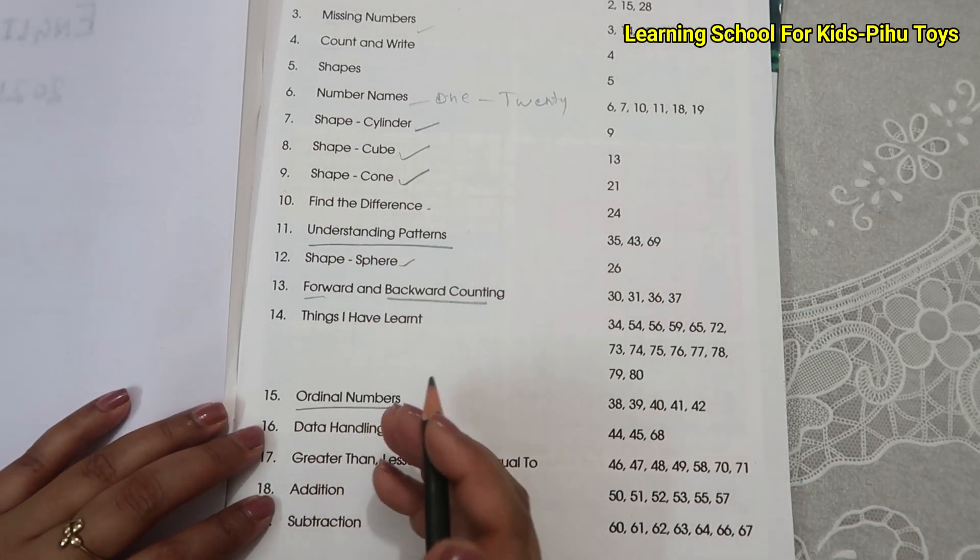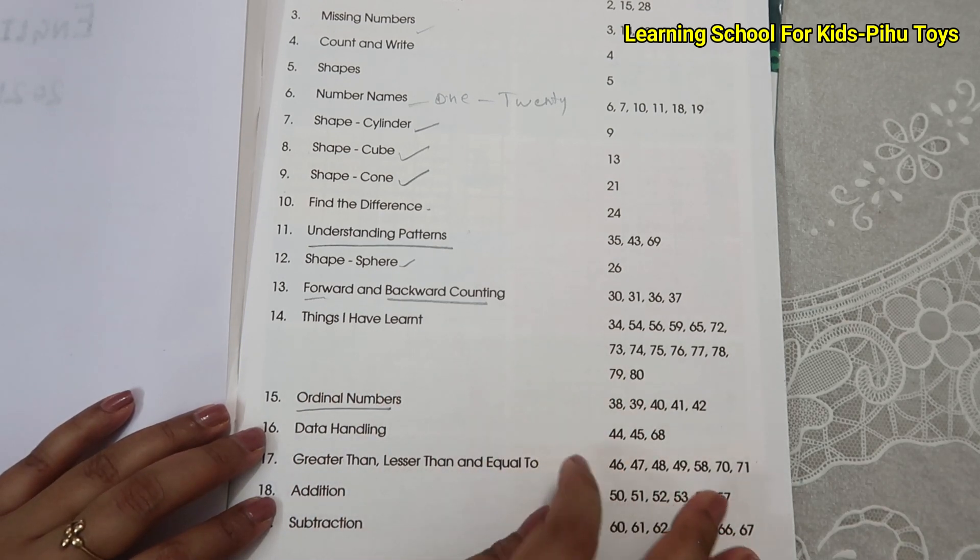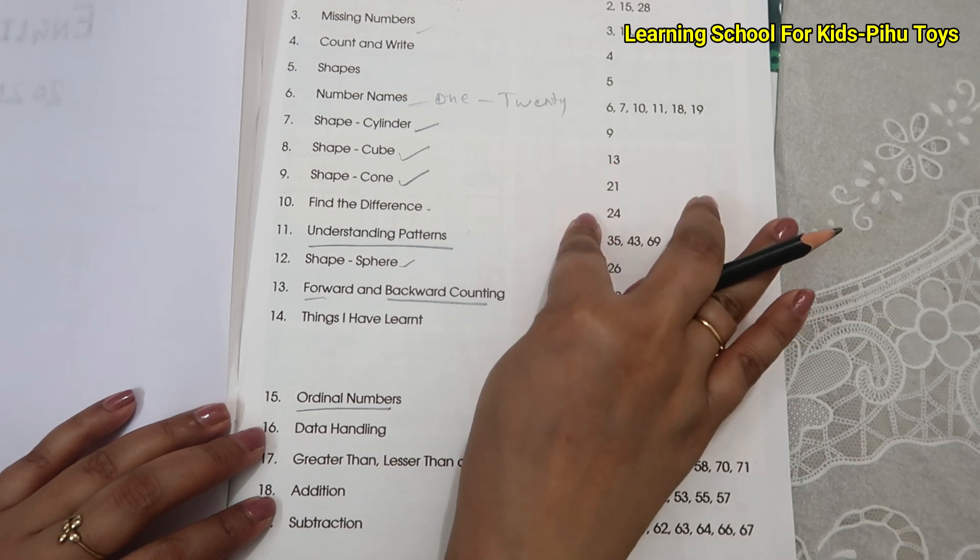Ordinal numbers like 1st, 2nd, 3rd, 4th, these are ordinal numbers. The numbers are taught to learn which object is in 1st place, 2nd place, and 3rd place.